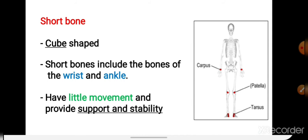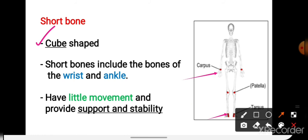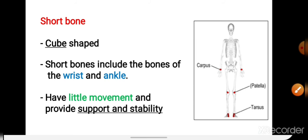The second type of bone is short bone. Short bones are roughly cube-shaped. They include bones of the wrist and ankle. They provide little movement and offer support and stability to the body.